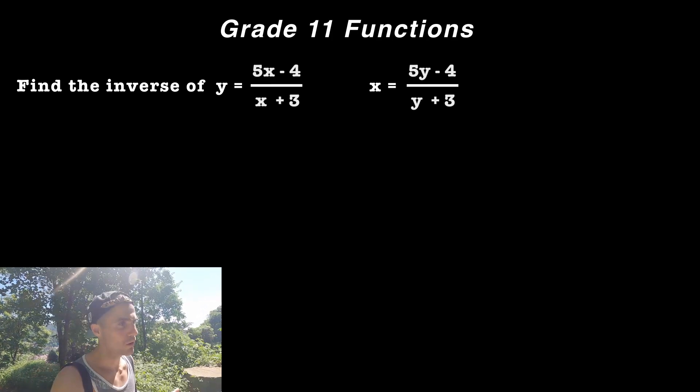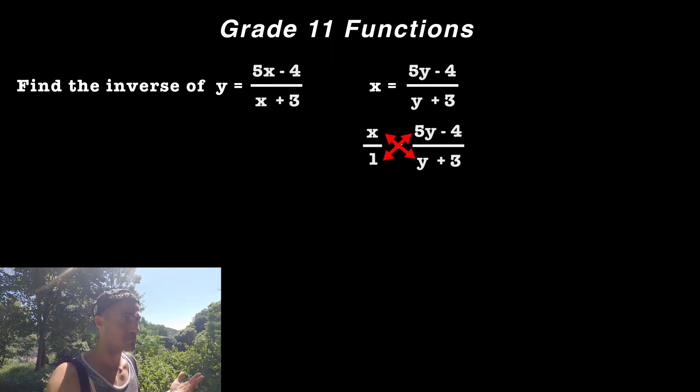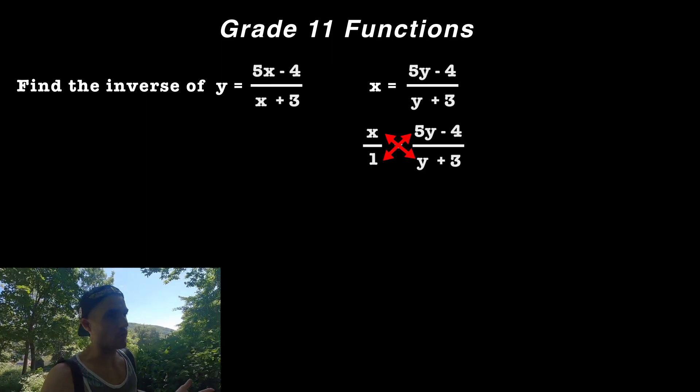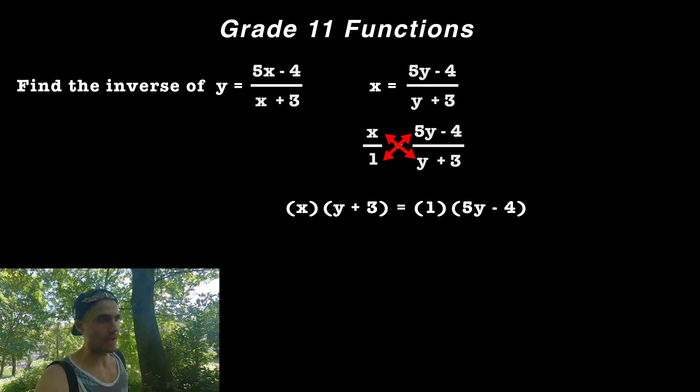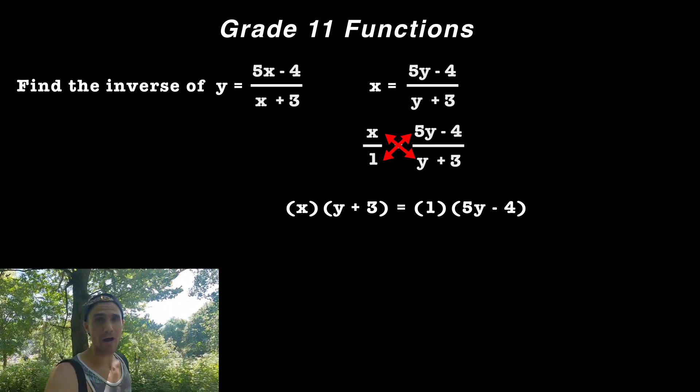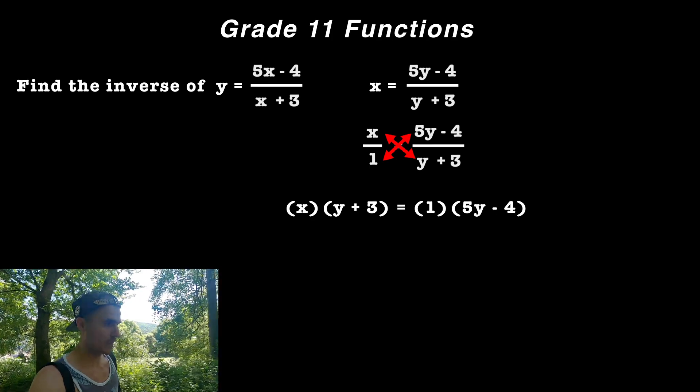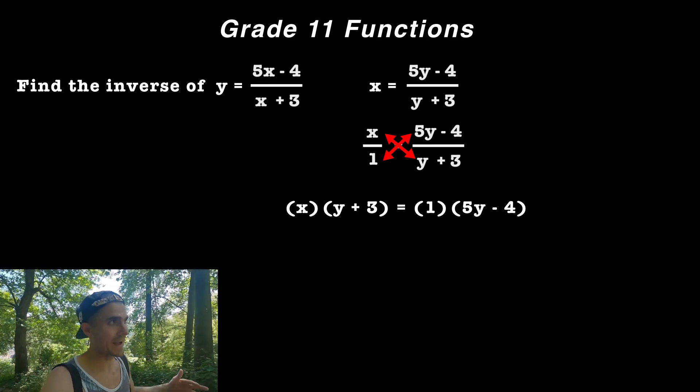So how are we going to do that? Well what we could do is we can cross multiply, and so what we would end up with is x bracket y plus 3 is equal to 5y minus 4.